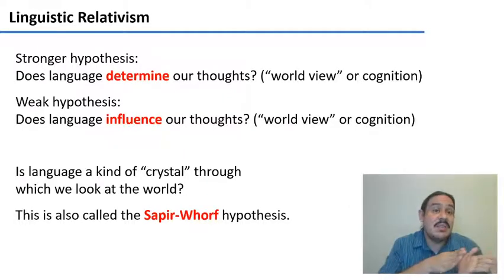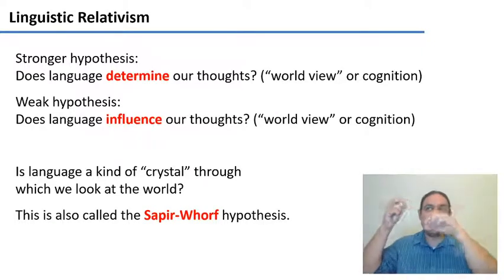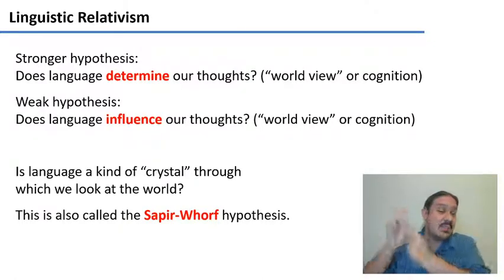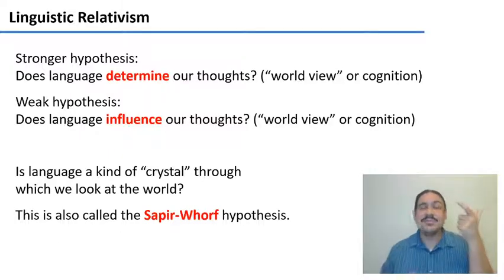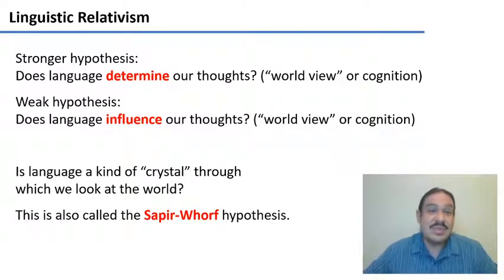That's a very strong hypothesis. There's a weaker equivalent, which asks: maybe your language influences your thoughts — like the words I have in English or Spanish influence how I perceive the world. In both of these hypotheses, human languages are a kind of crystal placed in front of your eyes as a way to understand the world. We call this the Sapir-Whorf hypothesis.